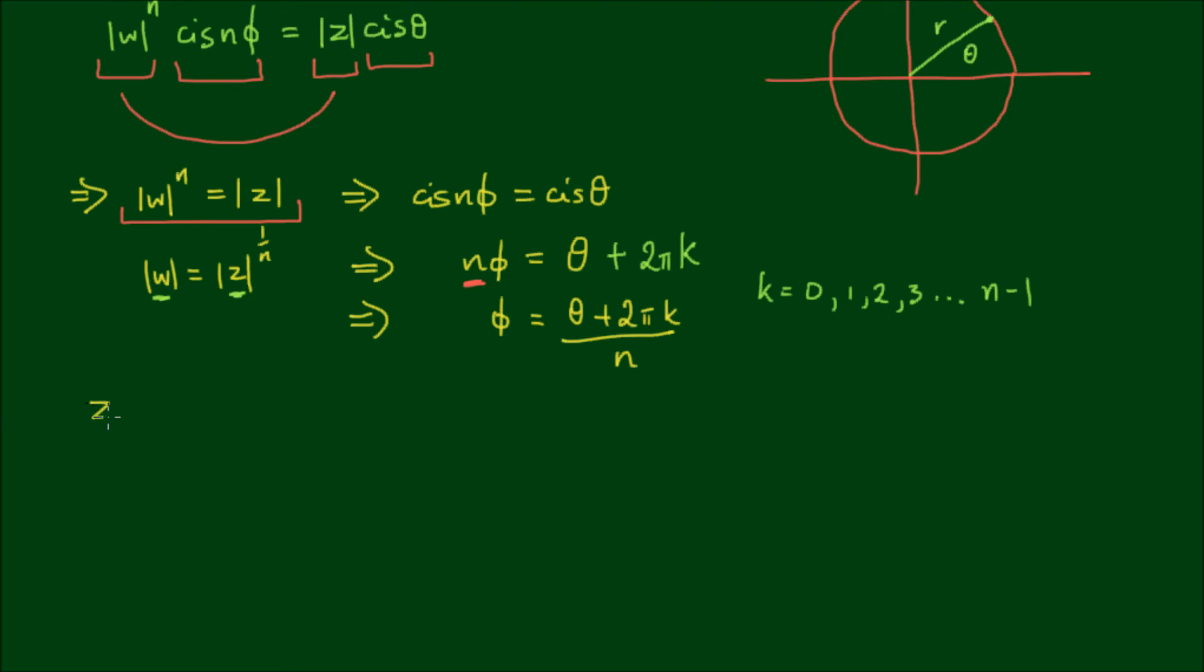Finally, the nth root of the complex number z equals w, which equals |z|^(1/n) times cis[(θ + 2πk)/n].